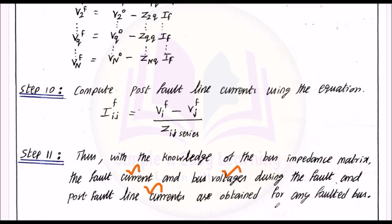These are the 11 steps of the algorithm. This is a very important topic — you must be able to draw the flowchart and write all 11 algorithm steps. This completes the fault analysis using the bus impedance matrix.